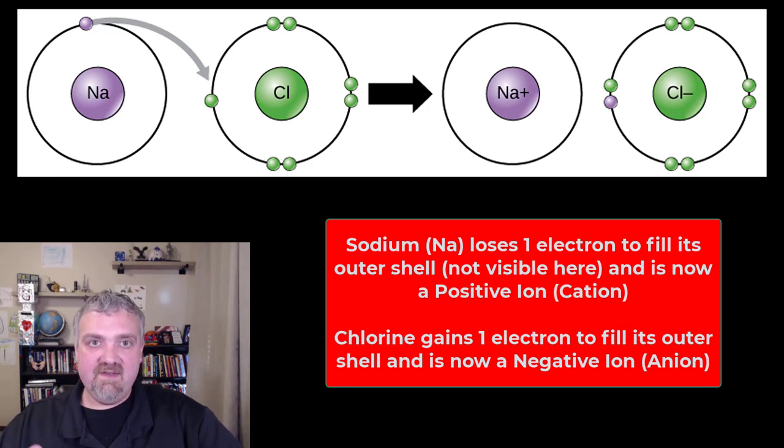So sodium wants to give up an electron. Chlorine wants to gain an electron. Once that happens, sodium is now a positive cation. Chlorine is now a negative chloride anion. And they now have opposite charges, which is why they often will stay close together because they will form an ionic bond.